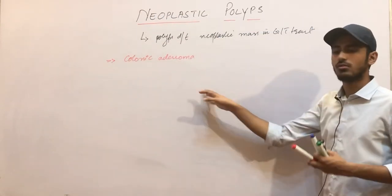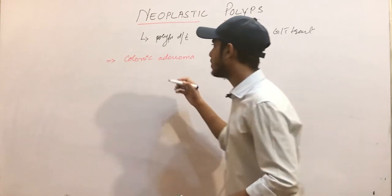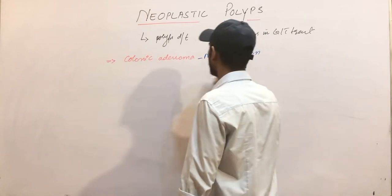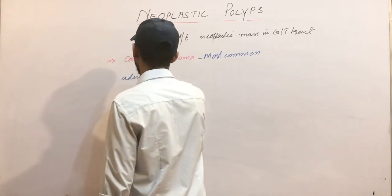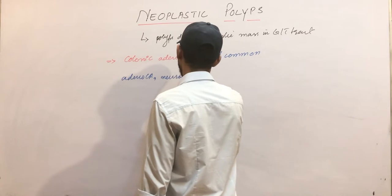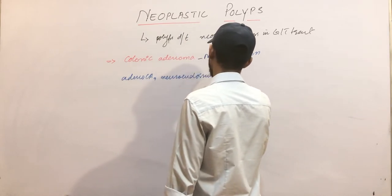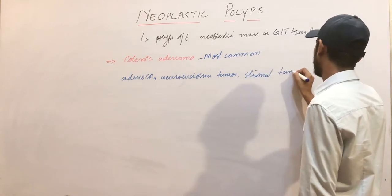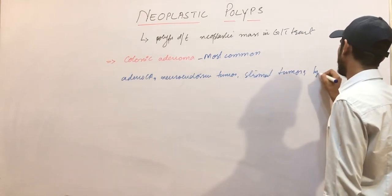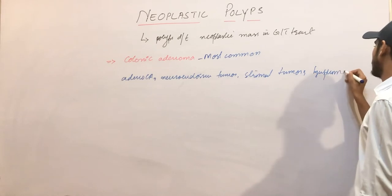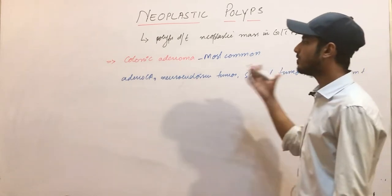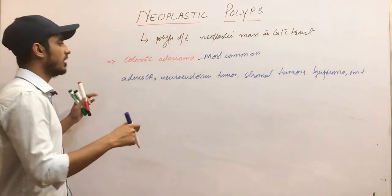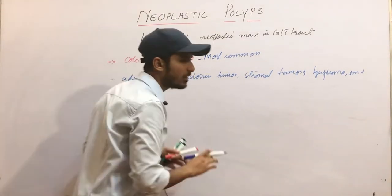Colonic adenoma is the most common neoplastic prolapse — a prolapse that occurs due to some neoplastic lesion or neoplastic mass. We also have others like adenocarcinoma, neuroendocrine tumors, stromal tumors, lymphomas, and metastatic tumors. So there are different types of tumors that can result in prolapse, but the most common is the colonic adenoma.